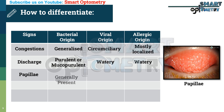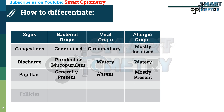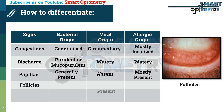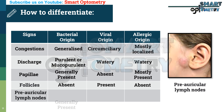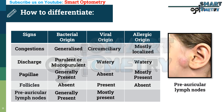Papillae: in bacterial origin, papillae are present. In viral origin, there are no papillae. In allergic origin, papillae are mostly present. Follicles: follicles are mostly seen in viral origin; in bacterial and allergic origin, follicles are rarely seen. Pre-auricular lymph nodes: in bacterial origin, generally present; in viral origin, mostly present; in allergic origin, absent.